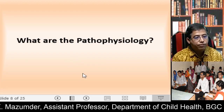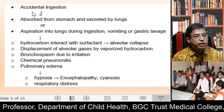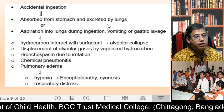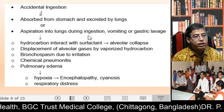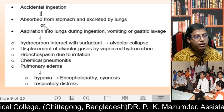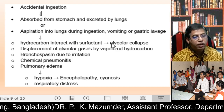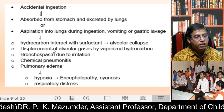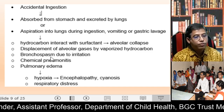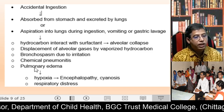Pathophysiology: when the child accidentally ingests kerosene, it is absorbed from the stomach and excreted by the lungs, or it is aspirated into the lungs during ingestion, vomiting, or gastric lavage. It produces interaction with the surfactant and leads to alveolar collapse. Displacement of the alveolar gases by the vaporized hydrocarbon produces bronchospasm, chemical pneumonitis, and ultimately pulmonary edema.